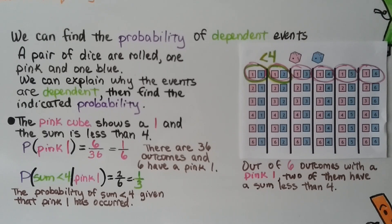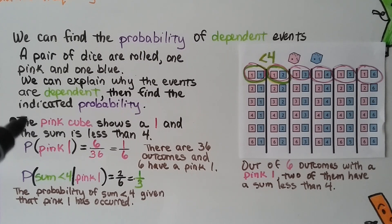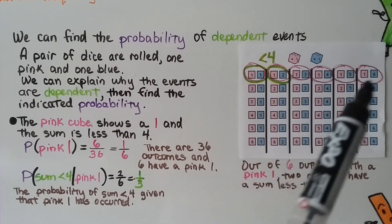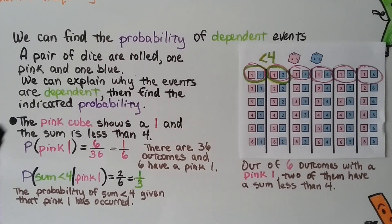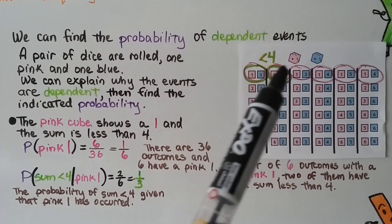We can find the probability of dependent events. A pair of dice are rolled — we have a pink one and a blue one. What's the probability the pink cube shows a one and the sum of the two cubes is less than four? If we look for the pink cube showing a one, there are six outcomes. But the sum being less than four narrows it down to just two of those six.